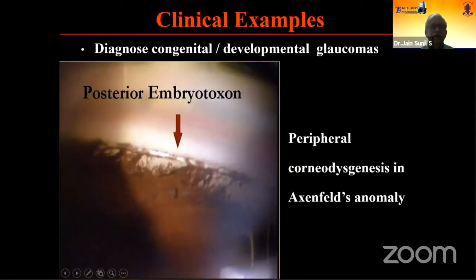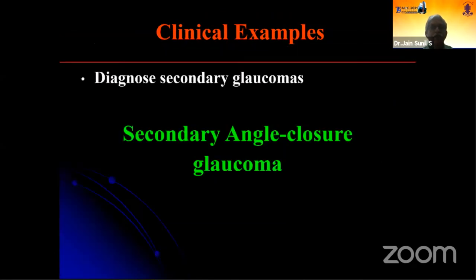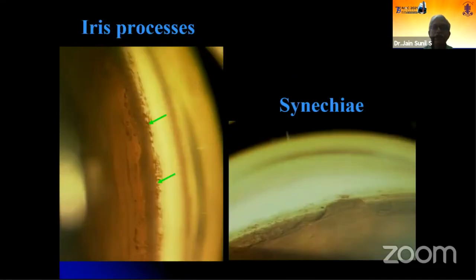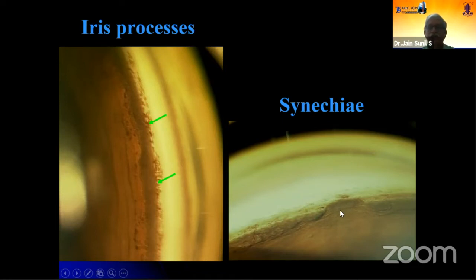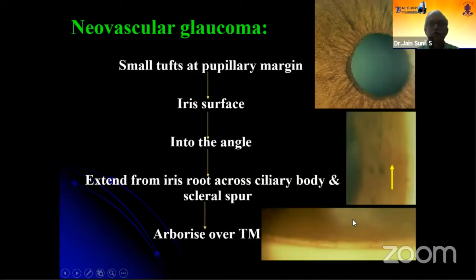This is how angle structures would appear in developmental glaucoma. These are normal iris processes — fine fibril-like structures from the stroma of the iris along the concavity. To compare, synechiae would be broad-based with peripheral pulling up of the iris. In neovascular glaucoma, you might miss the rubeosis at the pupillary margins, and it is only on gonioscopy that you might see the arborization extending over the trabecular meshwork.